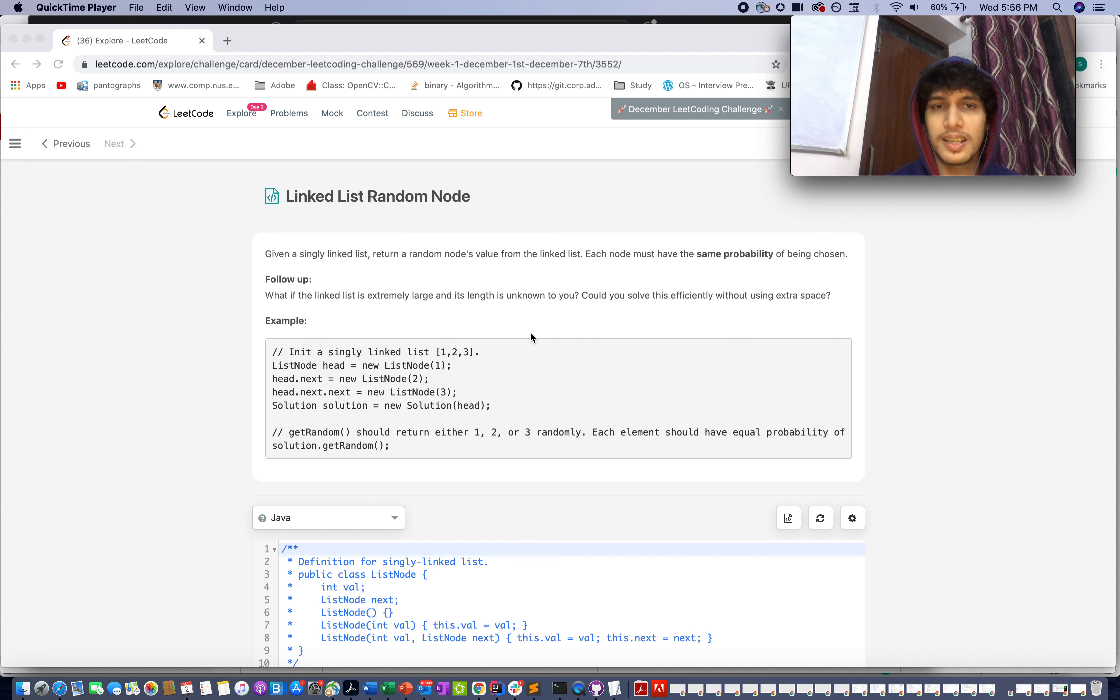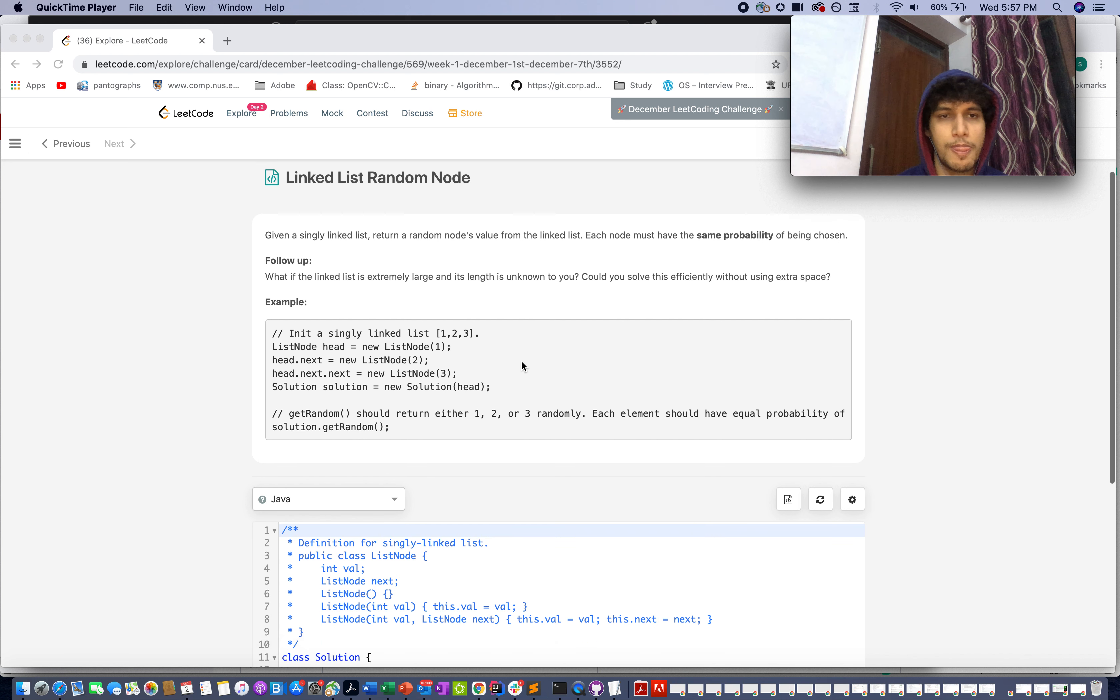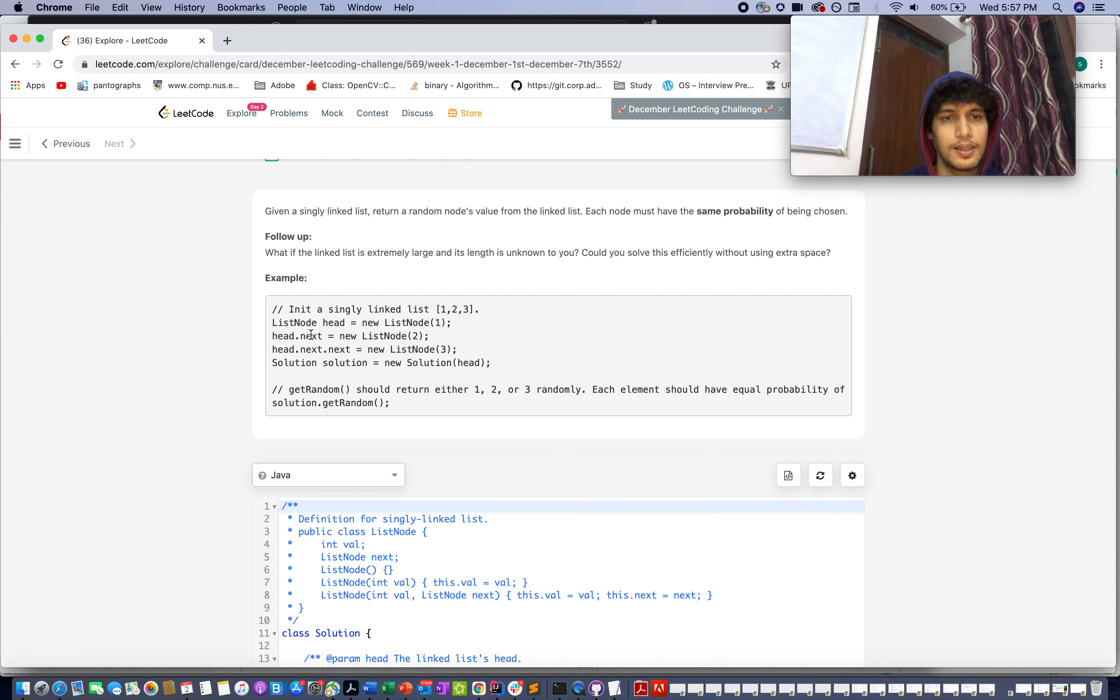Hello everyone, welcome to day 2nd of December LeetCode challenge and today's question is Linked List Random Node. In this question you are given a singly linked list and you need to return a random node value from the linked list such that each node has equal probability of being chosen. Very simple description. The question is based on the reservoir sampling problem. I'll explain about it as we go through the algorithm. Let's go through the example first.